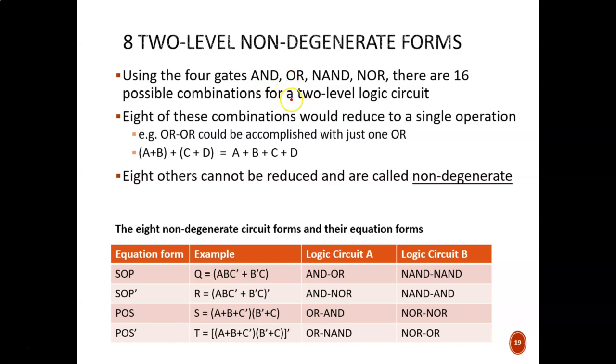there would be 16 possible combinations for a two-level logic circuit. You could have AND OR, AND NAND, AND NOR, NOR OR, and so on down the list. Eight of these combinations would reduce to just a single operation. For example, if we drew an OR OR circuit,